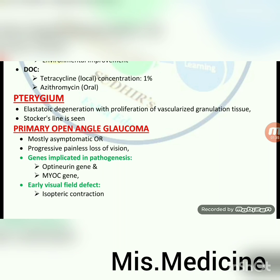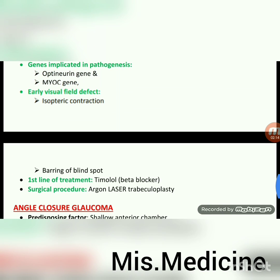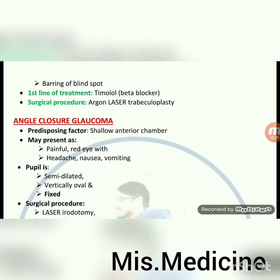Pterygium: elastotic degeneration with proliferation of vascularized granulation tissue; Stocker's line is seen. Primary open-angle glaucoma: mostly asymptomatic or progressive painless loss of vision. Genes implicated in pathogenesis: optineurin gene and MYOC gene. Early visual field defect: isopteric contraction, baring of blind spot. First line of treatment: timolol (beta blocker). Surgical procedure: argon laser trabeculoplasty.